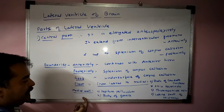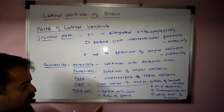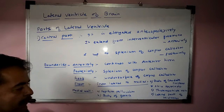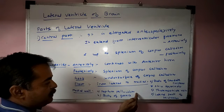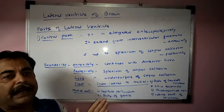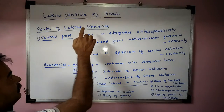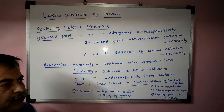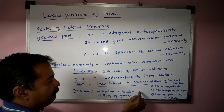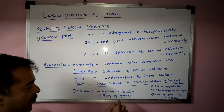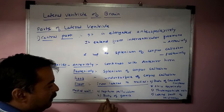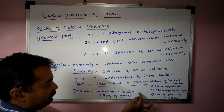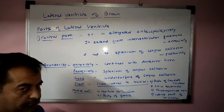The medial wall of the central part is formed by the septum pellucidum, which separates the two lateral ventricles, and the body of fornix. So the medial wall is formed by the septum pellucidum and the body of fornix.